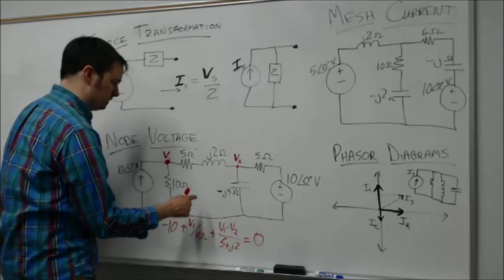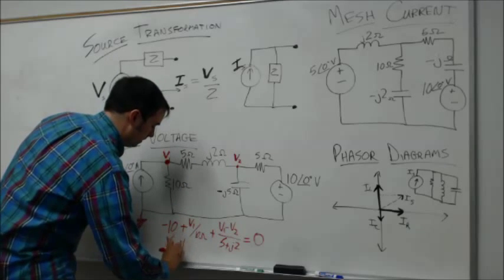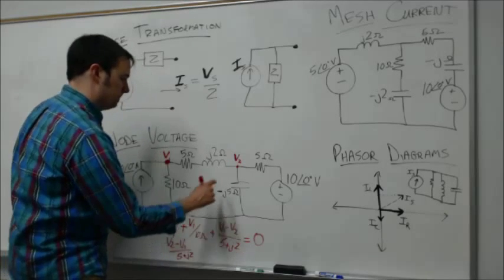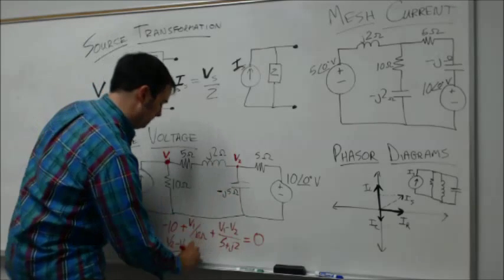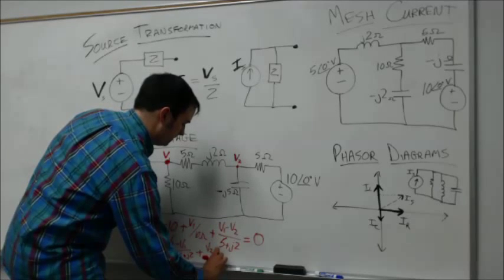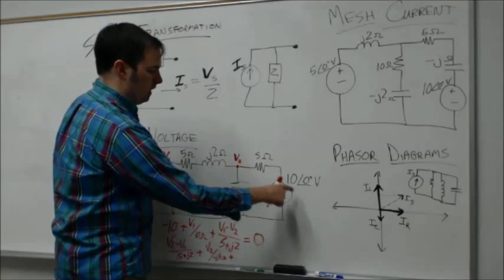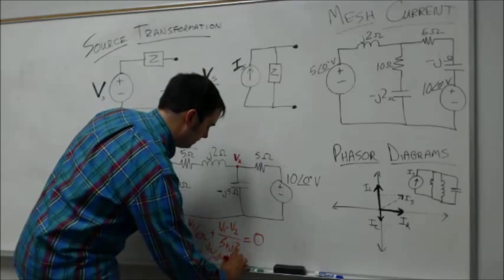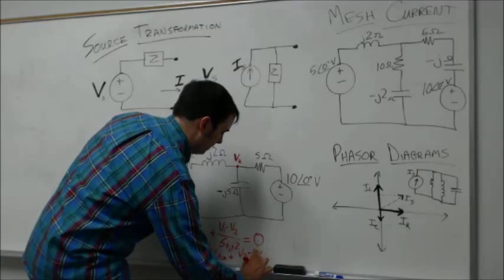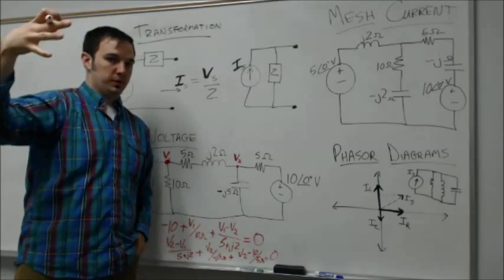We write another equation for node voltage V2. The current is V2 minus V1 over 5 plus j2, coming down through the capacitor is plus V2 over negative j5, that's the impedance of the capacitor, and across the resistor is V2 minus the 10 volt source over 5 ohms, also equal to zero.